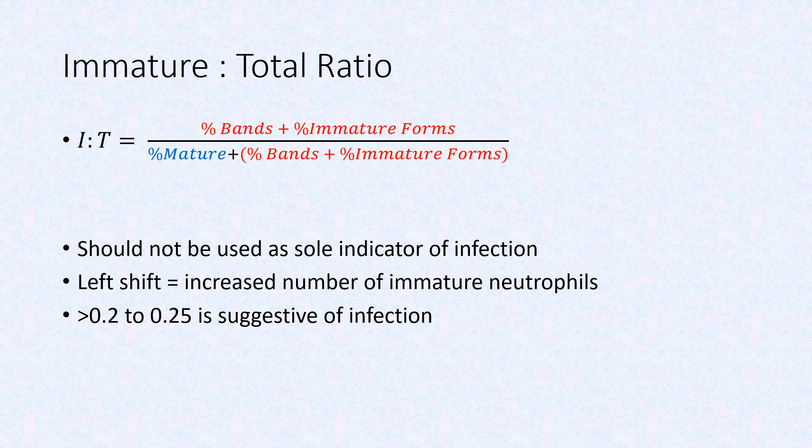The IT ratio is most informative if taken 1–4 hours after birth. It can best be used for negative predictive value — if the IT ratio is normal, the likelihood of not having an infection is very accurate.